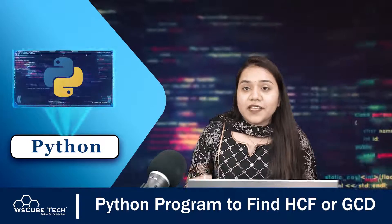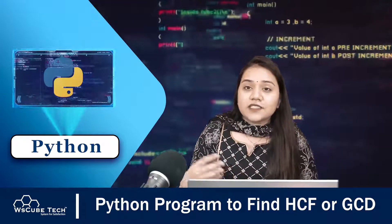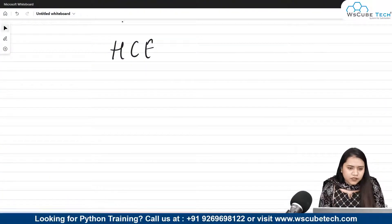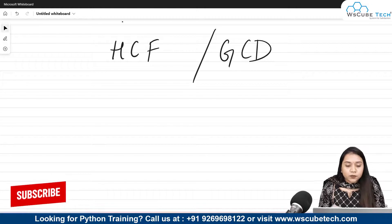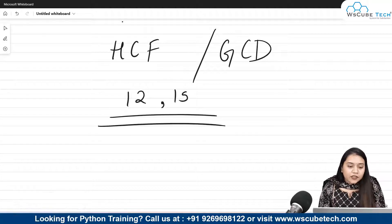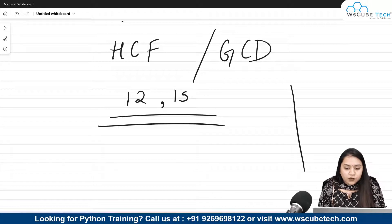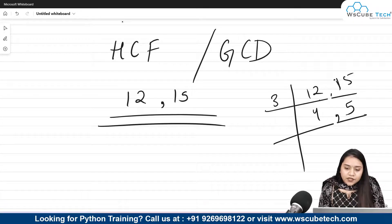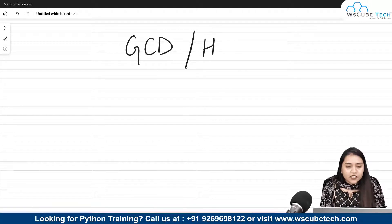We will be finding the HCF or GCD of a number. First, let's understand the logic of how an HCF or GCD is found, and then we will put it inside our Python program. For example, suppose we have 12 and 15 — the highest number that divides both of them is 3.